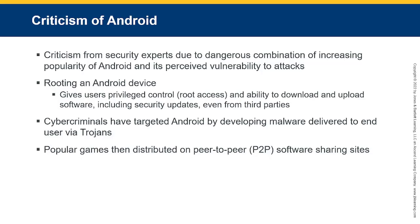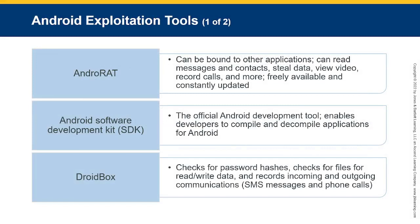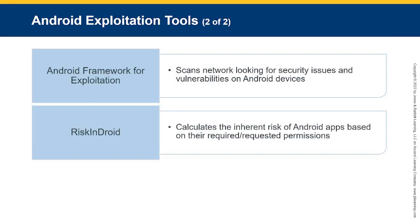Some of the tools for Android exploitation include tools that can be bound to an application to read messages and contacts, steal data, view video, and record calls. These are freely available and constantly updated. The Android SDK is the official Android development tool that enables developers to compile and decompile applications for Android. DroidBox can extract text or password hashes, read and write data files, and record incoming and outgoing communications including SMS messages and phone calls. The Android Framework for Exploitation, Caesar network, looks for security issues and vulnerabilities on Android devices. RISC in Android characterizes the inherent risk of Android apps based on their required permissions.